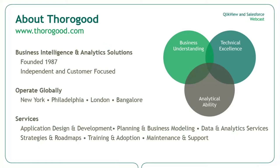We operate as a single global organization across our offices in the U.S., in New York and Philadelphia, in London, and in Bangalore, India. This allows us to serve our global clients around the world, wherever they may be. We provide end-to-end services meeting all business needs, from business intelligence analytics strategies and technology roadmaps through to the training and adoption of technologies and applications. The bulk of our work comes from the design, development, and delivery of these applications, such as the one we'll demo today.